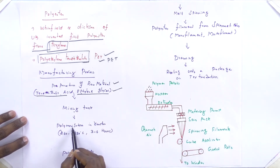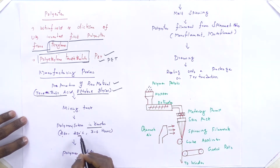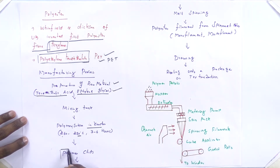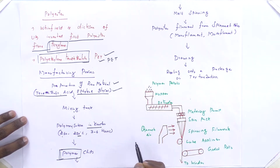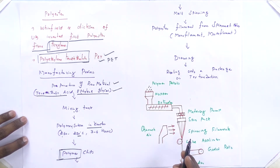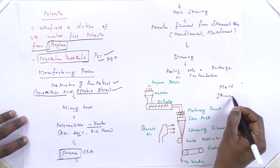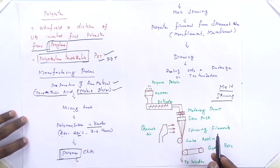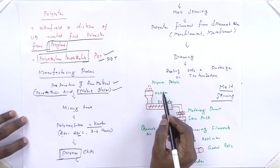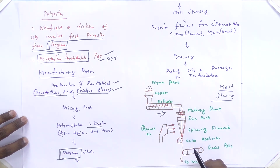For manufacturing polyester, the raw materials are terephthalic acid and ethylene glycol. These two chemicals are mixed in a tank, then a polymerization reaction takes place at a temperature of 260 to 280 degrees for around 3 to 6 hours. After polymerization, we obtain polymer chips in the size of pellets, which are the raw material for polyester fiber production. A melt spinning system is used to produce the polyester fiber.